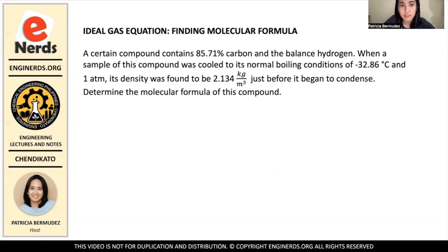So the problem states that a certain compound contains 85.71% carbon and the balance hydrogen. When a sample of this compound was cooled to its normal boiling conditions of -32.86°C and 1 atm, its density was found to be 2.134 kg/m³ just before it began to condense. Determine the molecular formula of this compound.